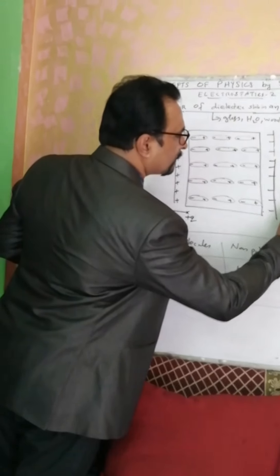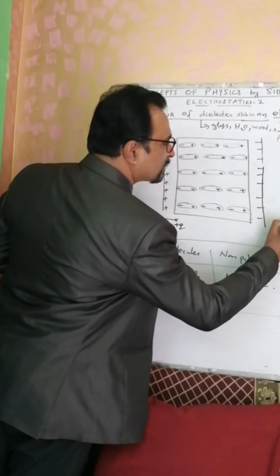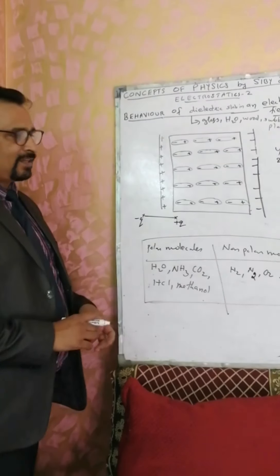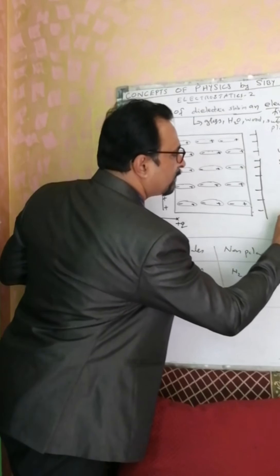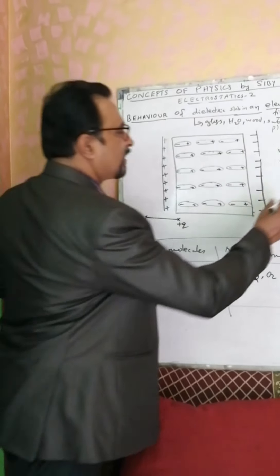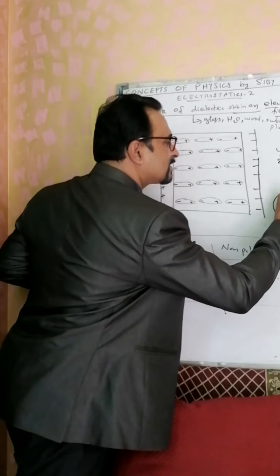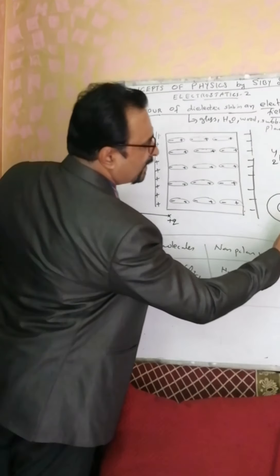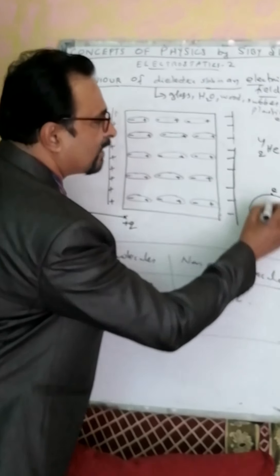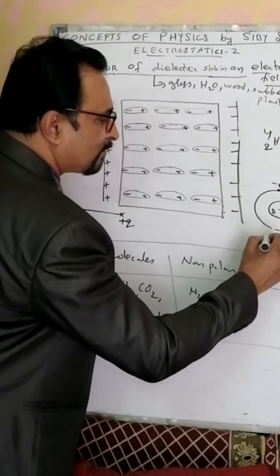Consider a helium atom. Inside the nucleus there are two protons, A and B. The center of mass of the positive charge is exactly at the midpoint of A and B. There are also two electrons revolving around the nucleus. Suppose one electron is located at one point and the second electron is at the diametrically opposite point. The center of mass of the negative charge also coincides at that same midpoint. So the center of mass of the positive charge and negative charge coincide.